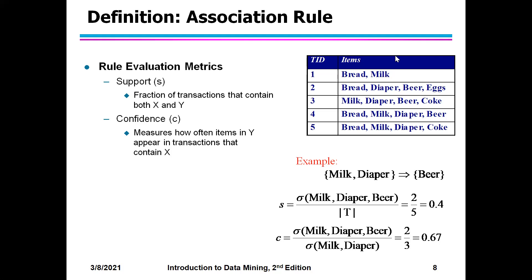Support of {milk, diaper, beer} divided by total transactions is 2 over 5, which equals 0.4. Support is 0.4 and confidence is 0.67. These two parameters — support and confidence — are used to evaluate your rules. You look for rules which satisfy a minimum support and a minimum confidence. For example, if support should be at least 40% and confidence at least 60%, only rules satisfying both conditions are considered valid.